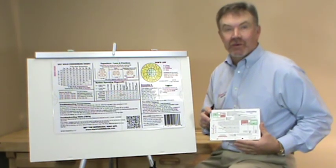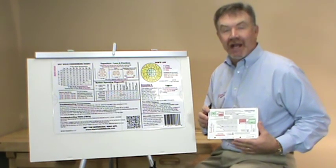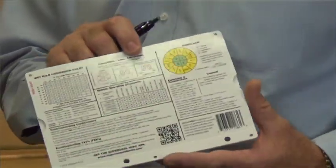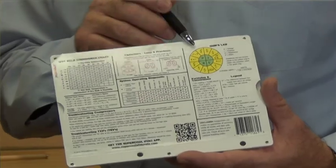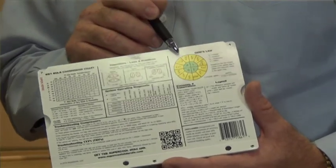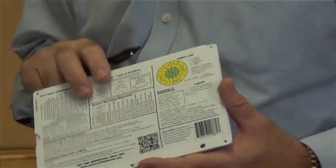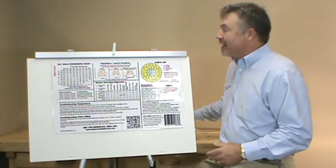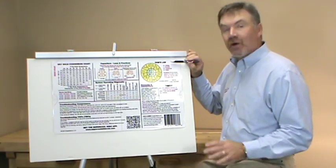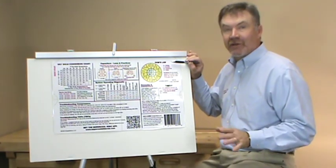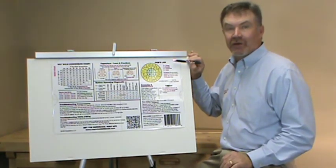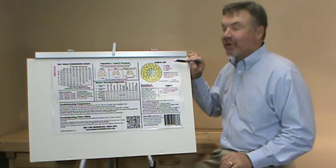Now, those of you who have a super cool slide wheel, go ahead and get it out. Turn it over. We're going to be working in the upper left hand corner of the super cool slide wheel. If you don't have a super cool slide wheel, it's okay. We'll still walk you through this tutorial and you'll learn how to use the Ohm's Law Wheel.